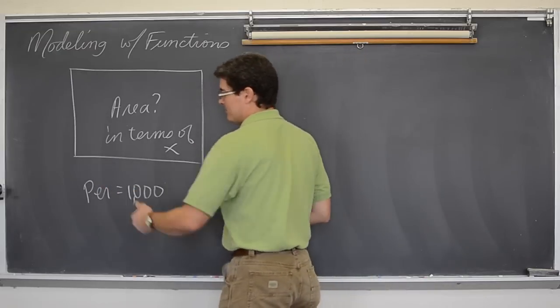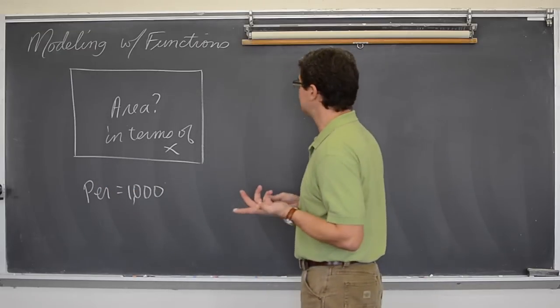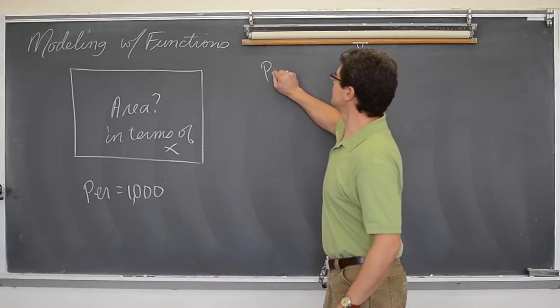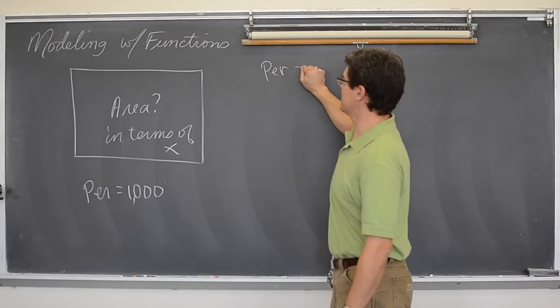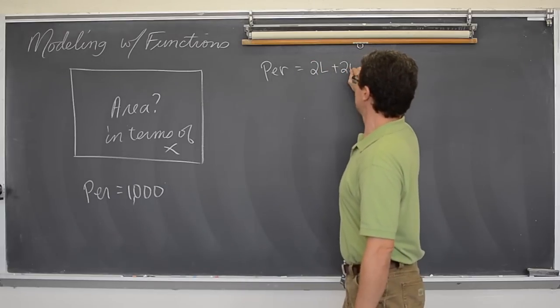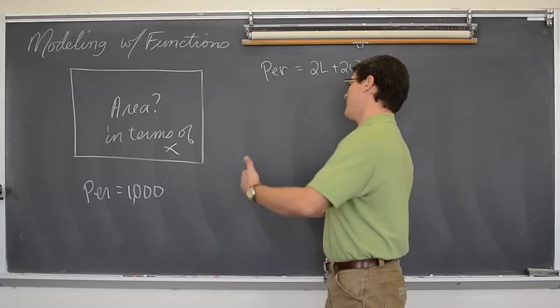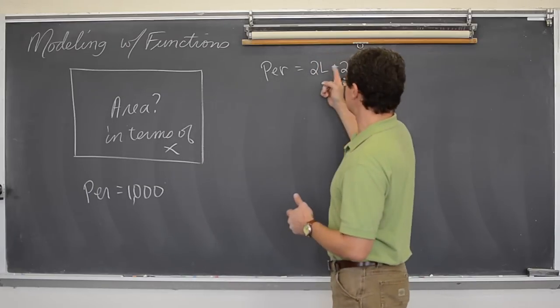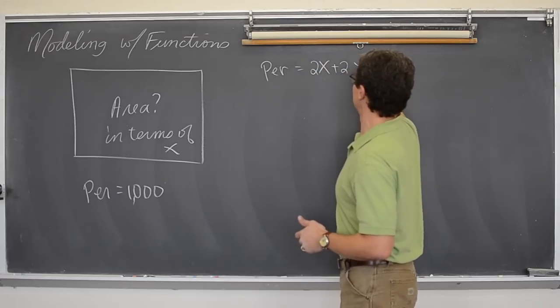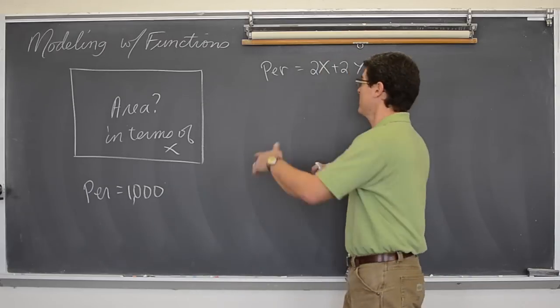We have a perimeter. Now the perimeter is 1000 feet, or inches, or miles, or just units. So the perimeter of an object, or a rectangle, is 2L plus 2W. Or I guess if we are going to do in terms of x or y, I probably should use instead of L and W, let's just call it x and y.